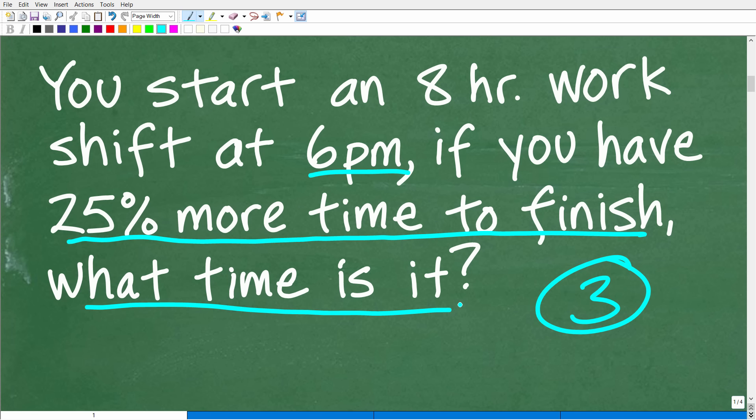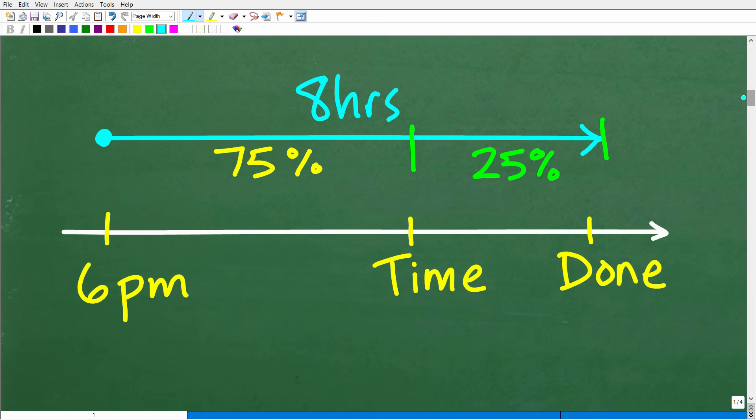Now, typically in most math word problems, you want to model that. Having a piece of paper and a pencil comes in pretty handy so you can model that. But here you have to kind of do some sort of visual model in your brain. So I'm like, all right, it's six o'clock right now and I have to finish this work shift out. So I have eight hours to go until I'm completely done from 6 PM. I got to go eight hours until I'm done, and I'll be off work.